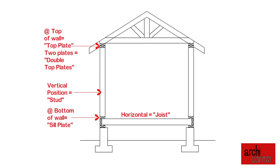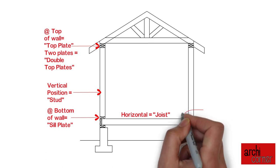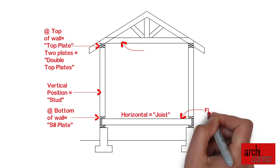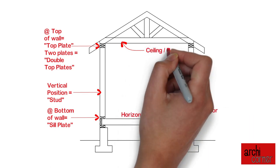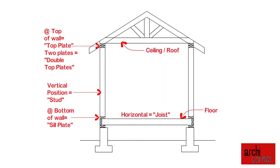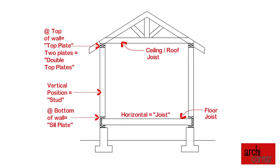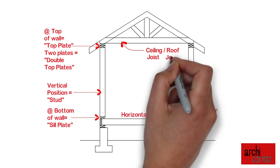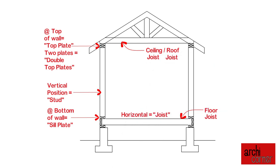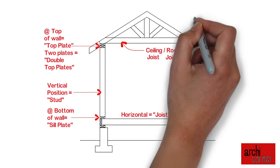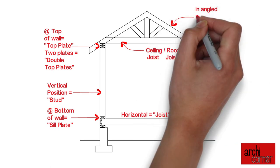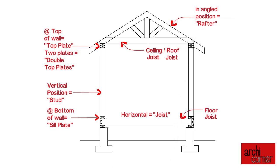If you look carefully, you can see there are a couple of occasions where you see joists — one at the floor and one at the ceiling or roof. To differentiate these, even though both are technically joists, you can say one is a floor joist and the other is a ceiling joist, or a roof joist, which in this case is technically the same. Now as you get to your roof structure, something interesting happens: if a member is angled, then it's a rafter.